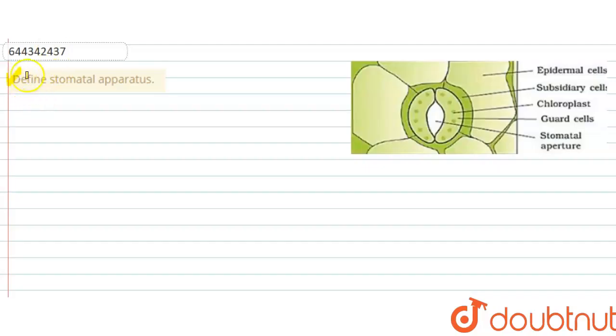Our question says define stomatal apparatus. We all are familiar about the stomata which is present in our leaf. And the whole structure of stomata, that means the epidermal cells, subsidiary cells, and the guard cells.